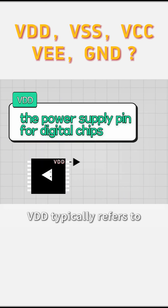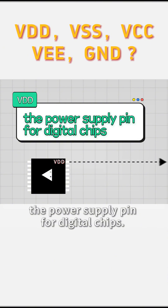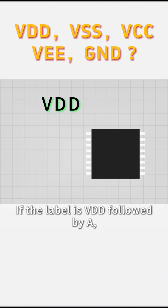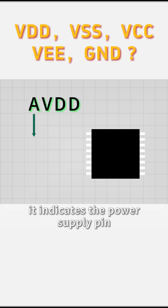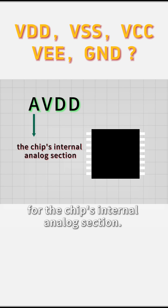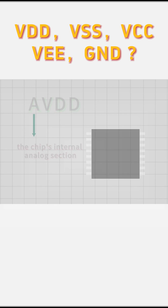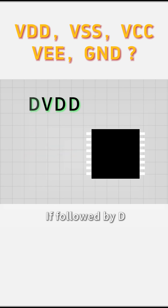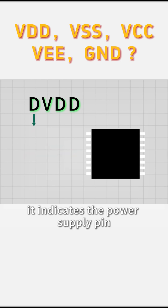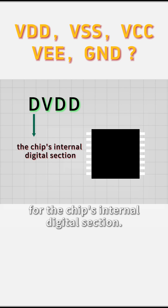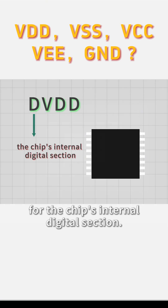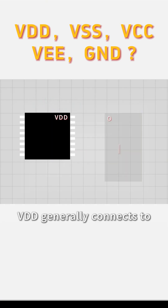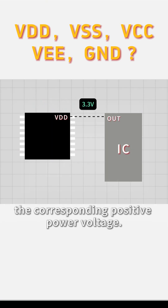VDD typically refers to the power supply pin for digital chips. If the label is VDD followed by A, it indicates the power supply pin for the chip's internal analog section. If followed by D, it indicates the power supply pin for the chip's internal digital section. VDD generally connects to the corresponding positive power voltage.